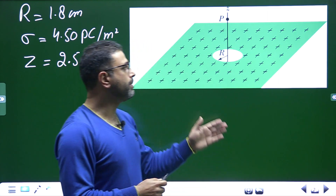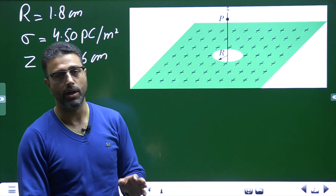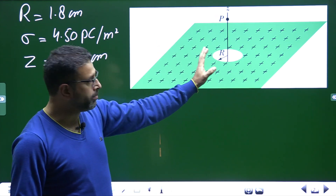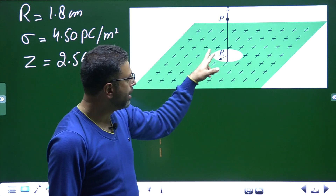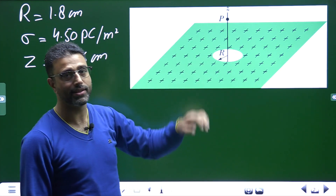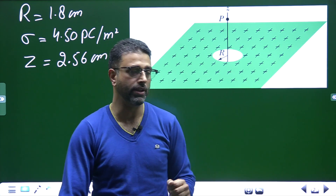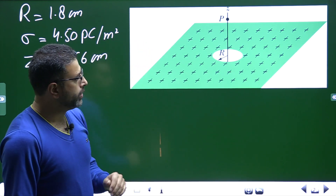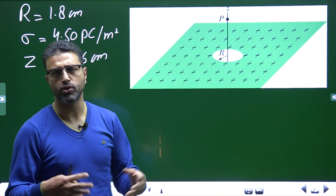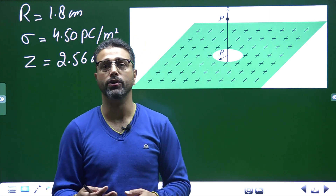Had it been a complete sheet, we know the field would be sigma divided by 2 epsilon 0. But this is not a complete charge sheet — we have a circular portion of it of radius R which does not have any charge. So what we will do is very simple: we will use the superposition principle, that the net field is the vector sum of individual fields.